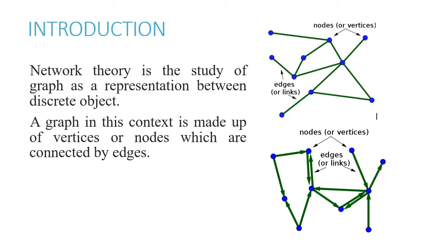Let's begin with the introduction. Network theory is the study of a graph as a representation between discrete objects. A graph in this context is made up of vertices or nodes which are connected by edges or links. For a better illustration, we can see the example of the simple graph shown here. Above is the image of the undirected network consisting nodes and edges, and the below one is an image for a directed network.